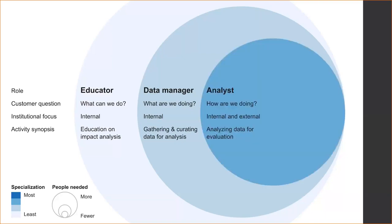The third role is the analyst — a more active role about actually crunching the numbers and doing the analyses. This includes generating an H-index or percentile ranks for a set of publications, all the way through more advanced collaboration analyses, topic analyses, and so forth. This is a much more active role in the assessment ecosystem.